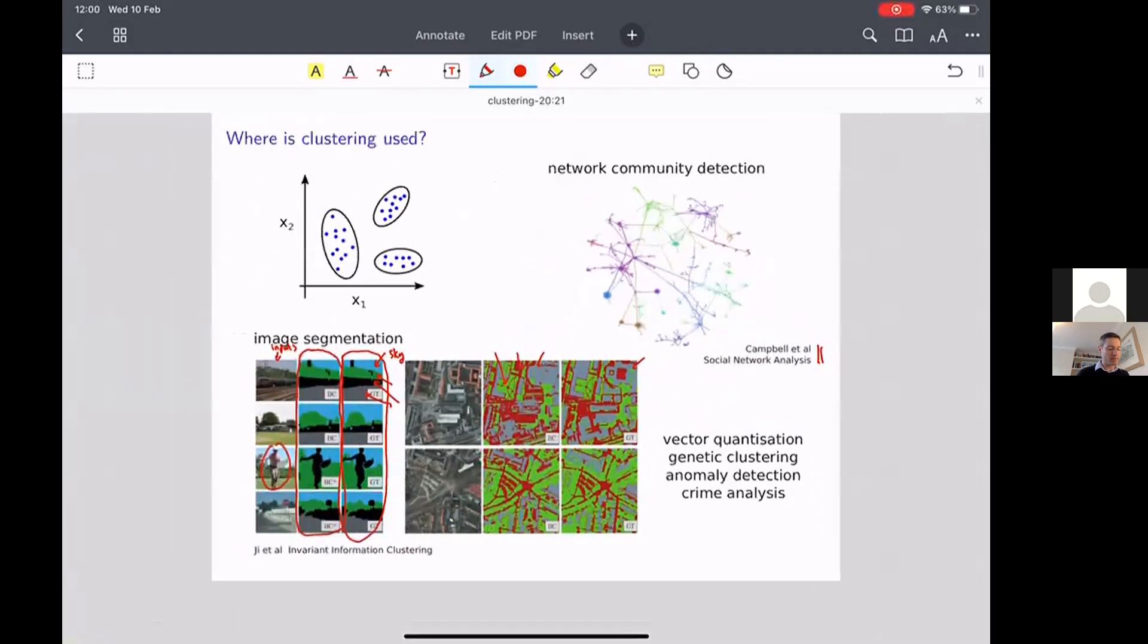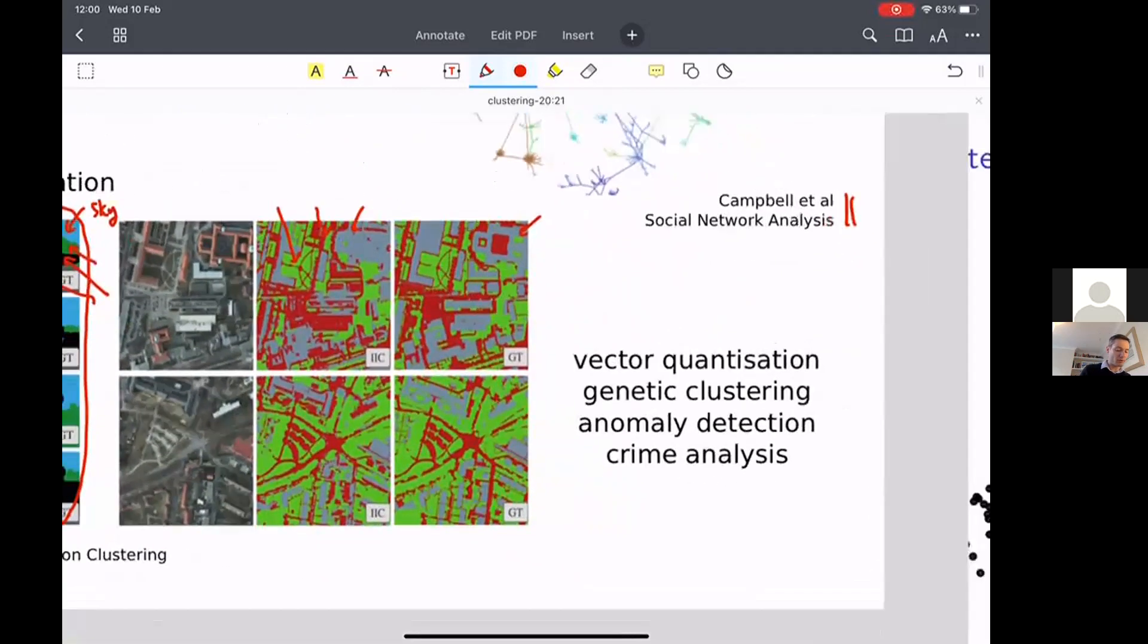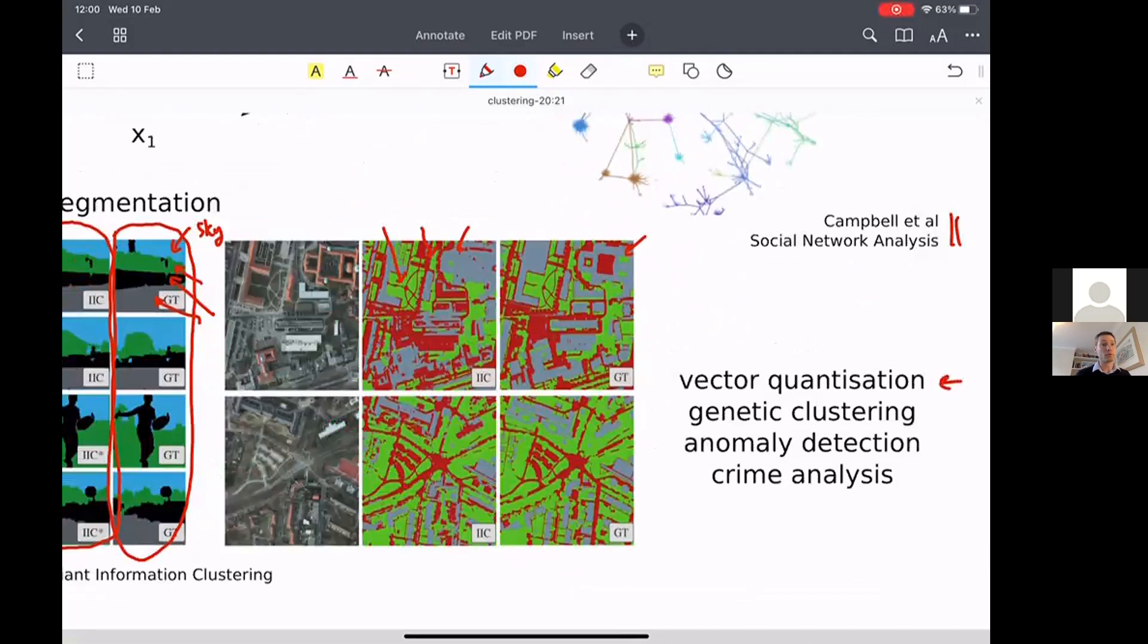There are lots of other examples. So vector quantization is a really important technique where you take in a vector, and then you want to compress it in a lossy way. And the way you're going to do that is you're going to assign each vector to one of k different canonical vectors, and you're going to pick the ones which are closest to it to encode it. And the way that you come up with those k canonical vectors that you're going to use to quantize the original vector is by clustering.